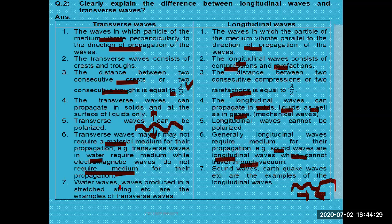Examples of transverse waves include water waves and waves produced in a stretched spring. Examples of longitudinal waves include sound waves and earthquake waves. The key differences between the two types involve whether particles move perpendicular or parallel to wave direction, and the distinction between crests and troughs versus compressions and rarefactions. Thank you very much.